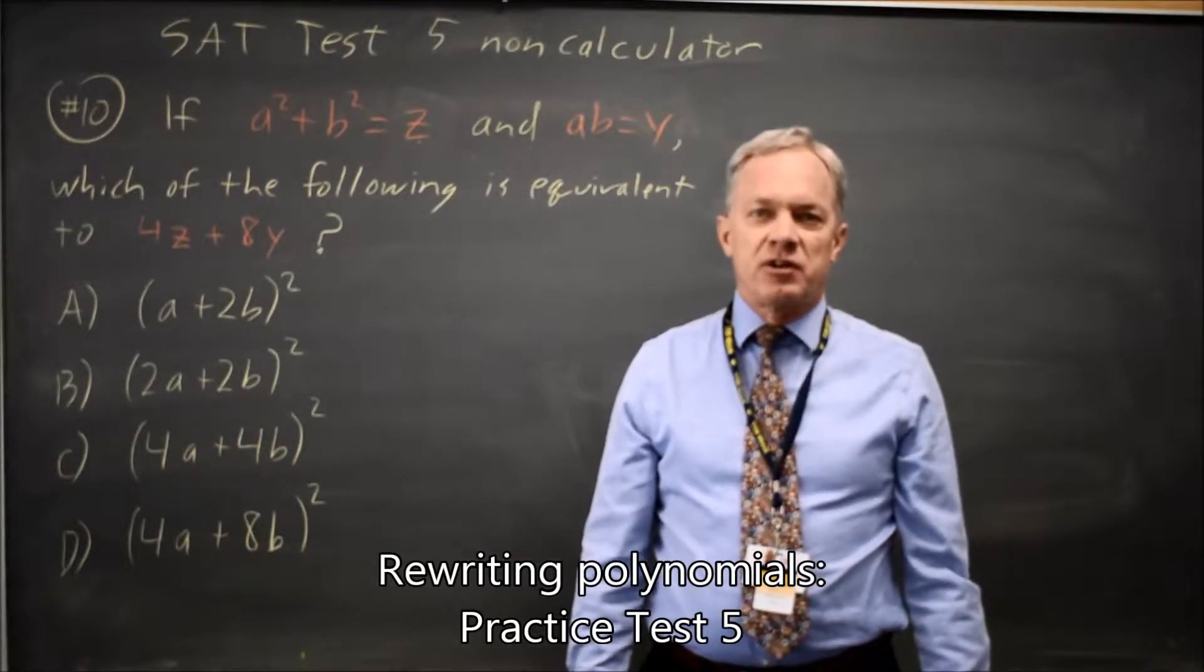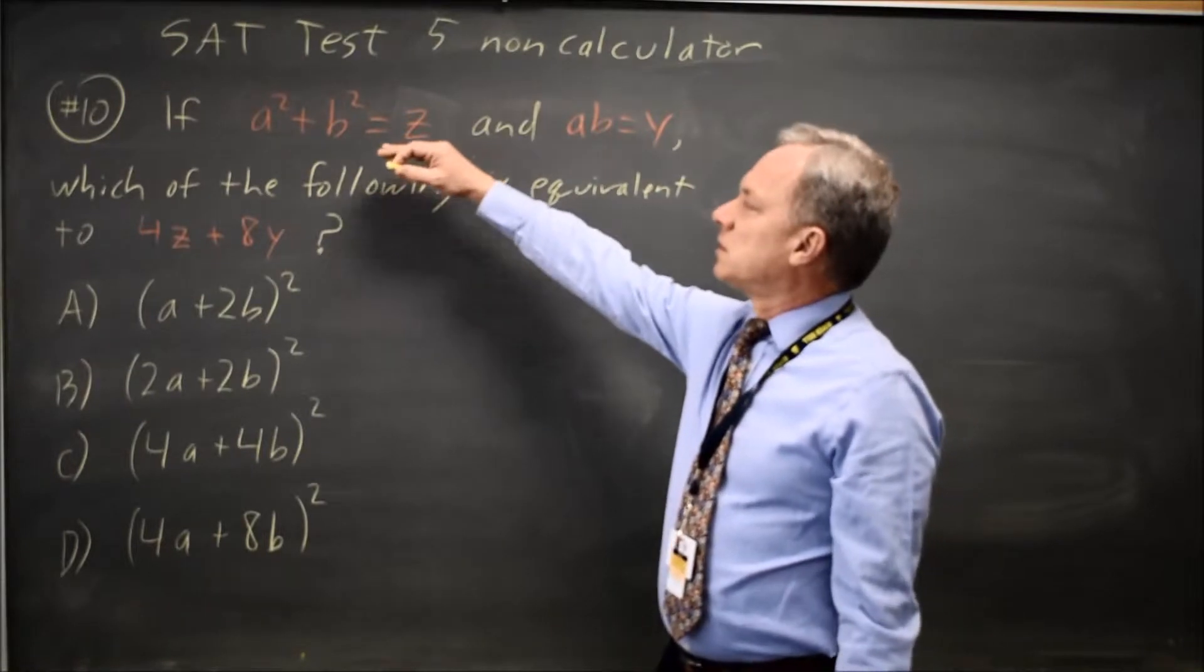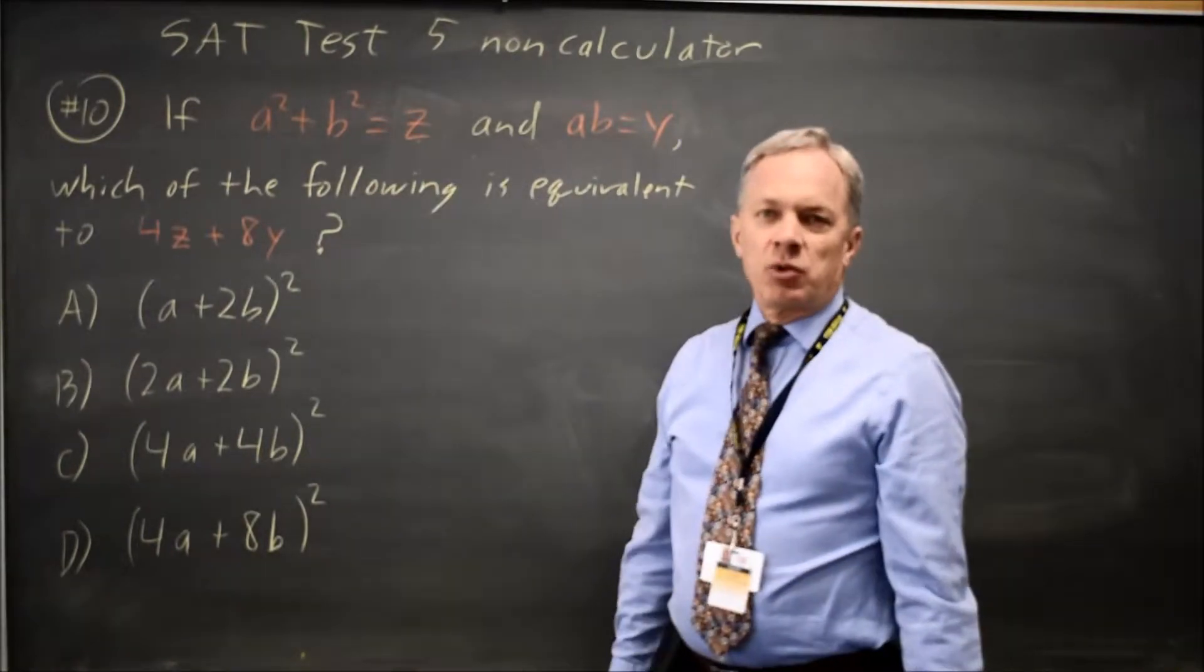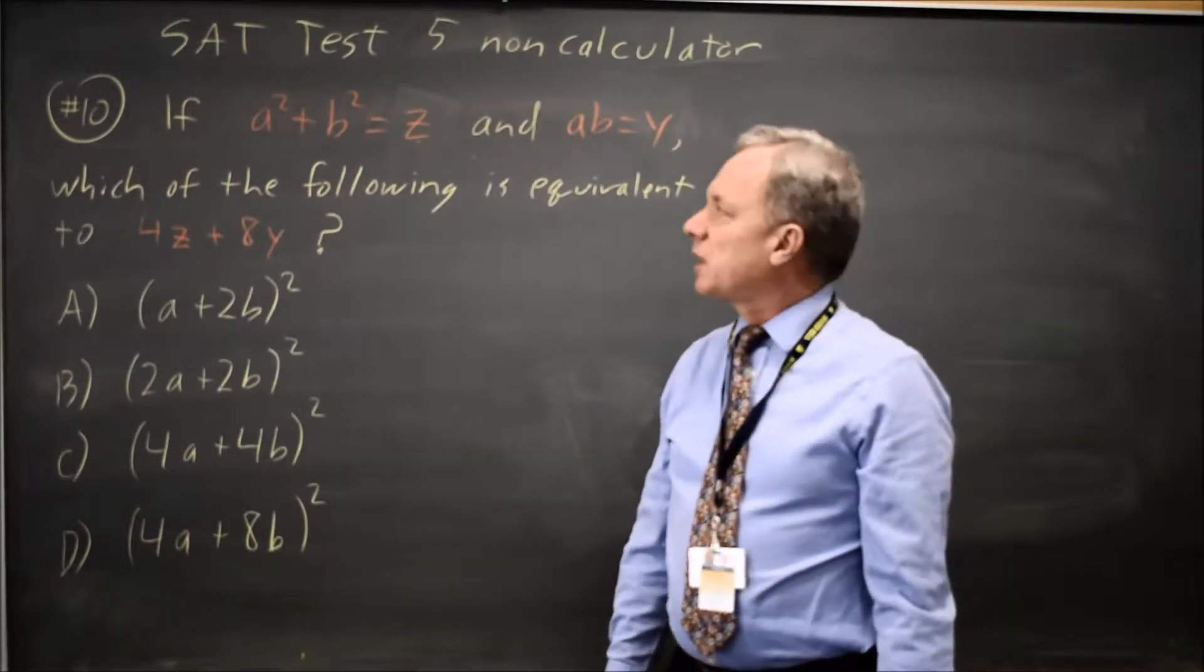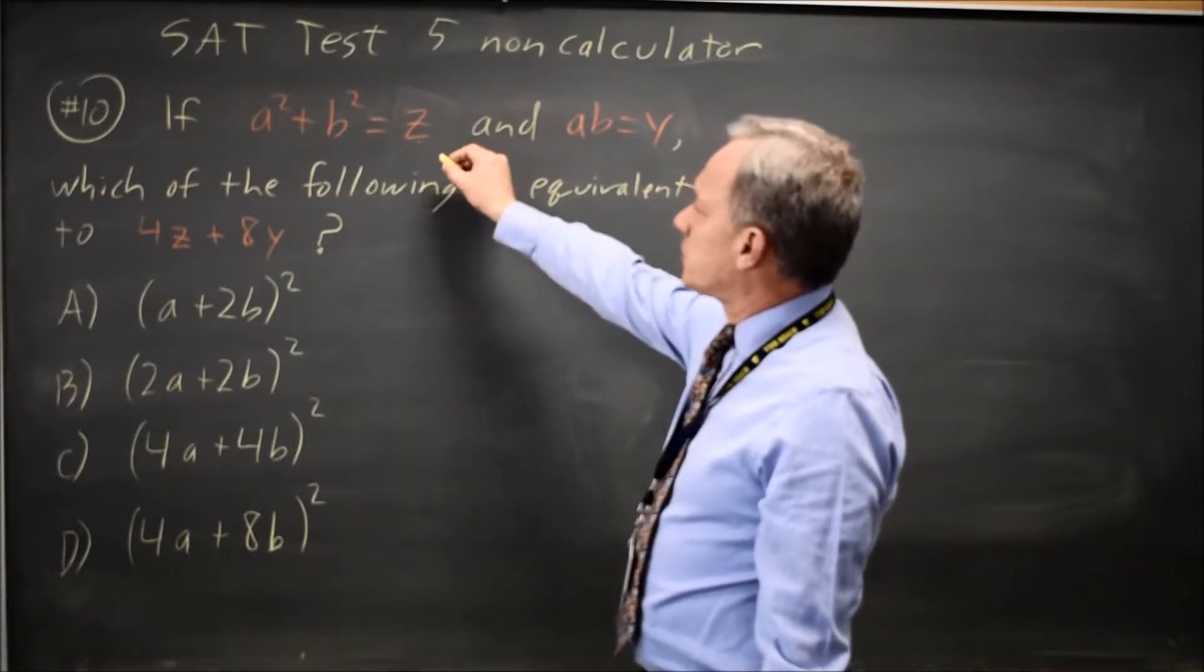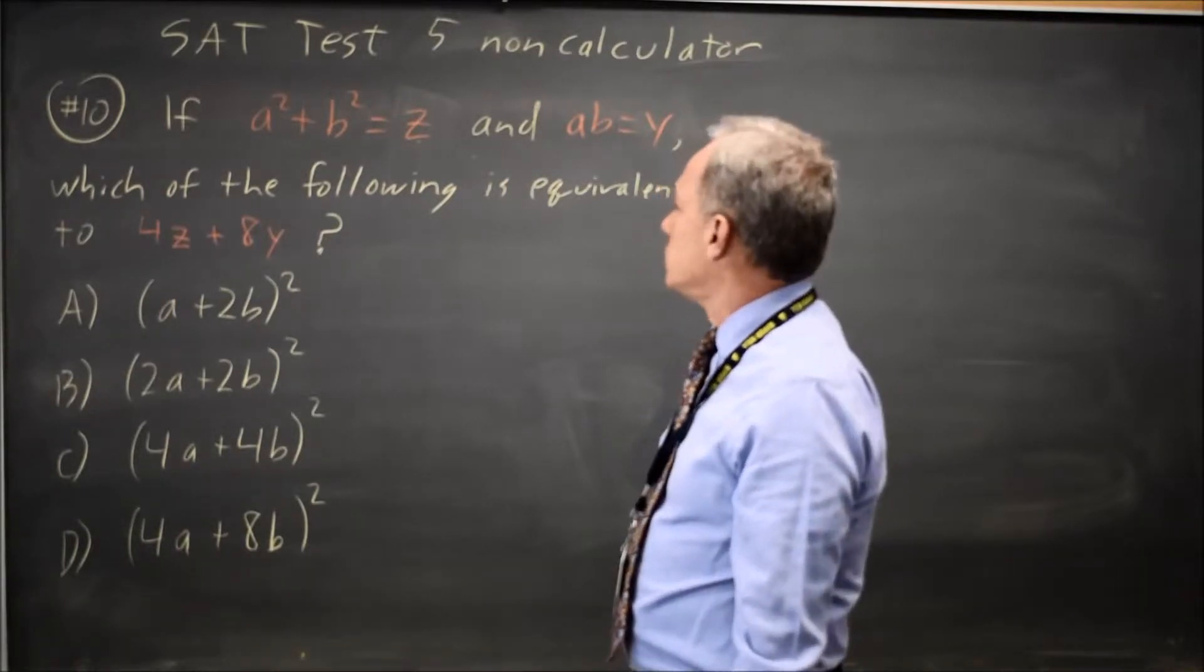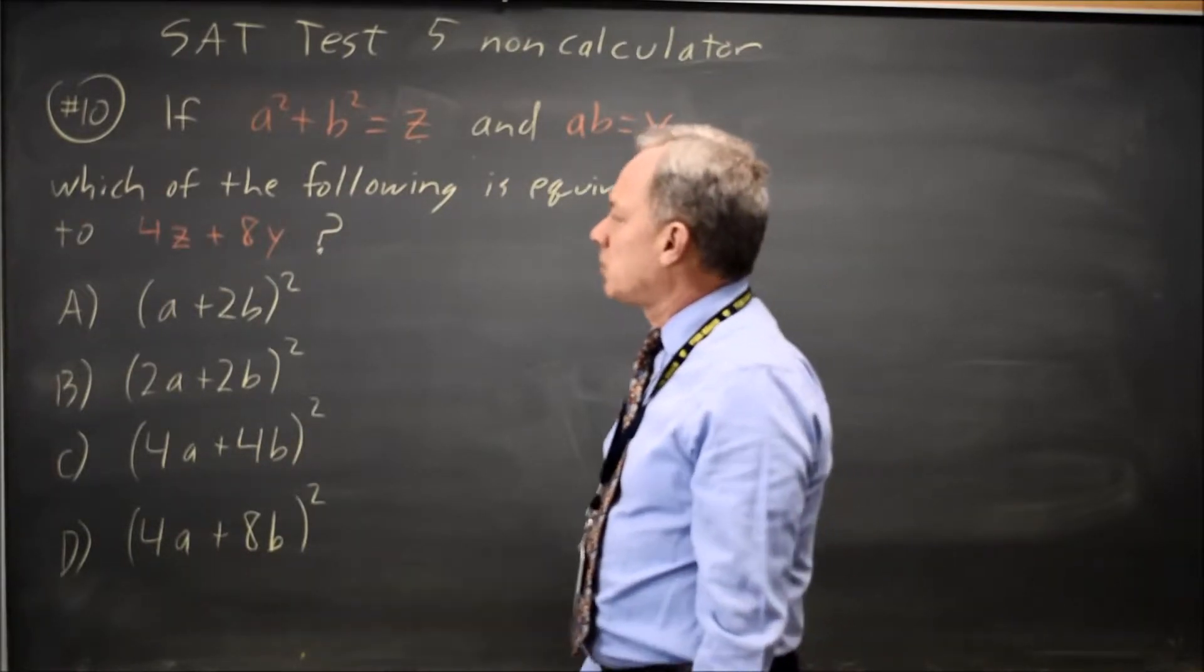This is SAT Test 5, non-calculator question number 10. College Board gives us a polynomial with two variables, a and b, and tells us a squared plus b squared equals z, and ab equals y. Which of the following, they ask, is equivalent to 4z plus 8y?